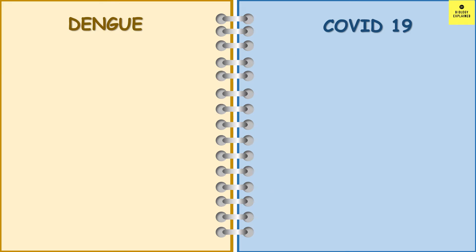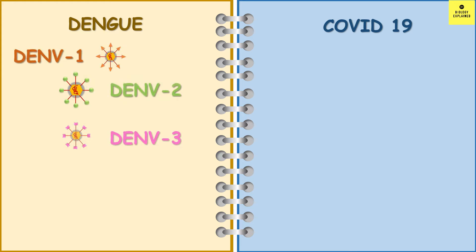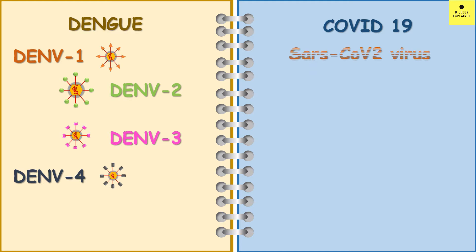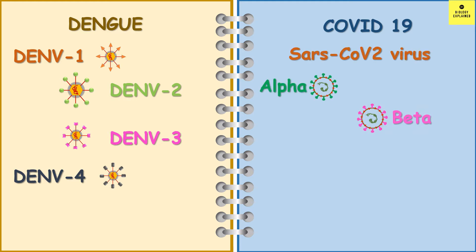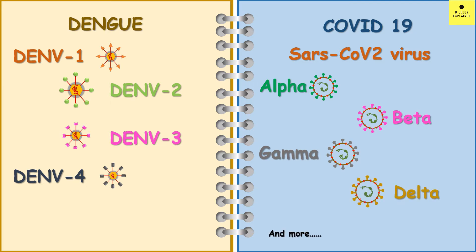Dengue can be caused by four related viruses: Dengue virus 1, Dengue virus 2, Dengue virus 3, and Dengue virus 4. In case of COVID-19, which is pretty new, we know that it is caused by SARS-CoV-2. Different variants are emerging, but still it's a single virus, SARS-CoV-2.